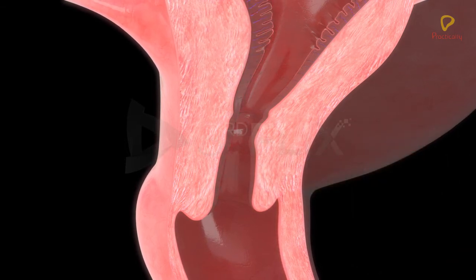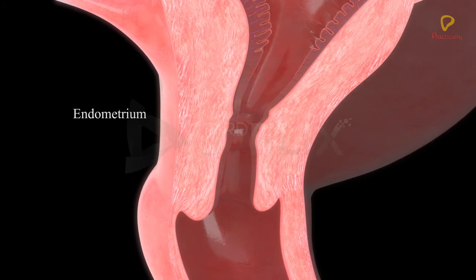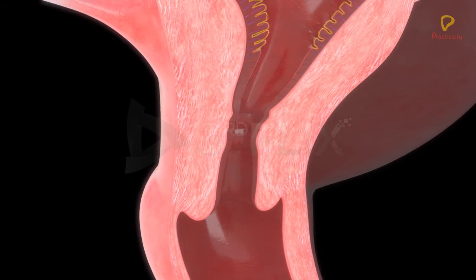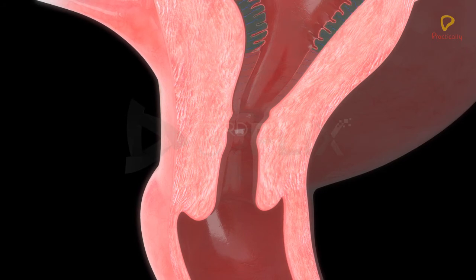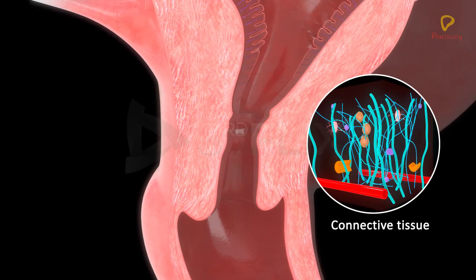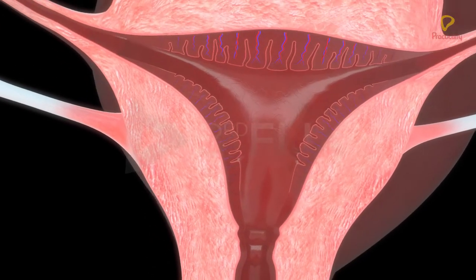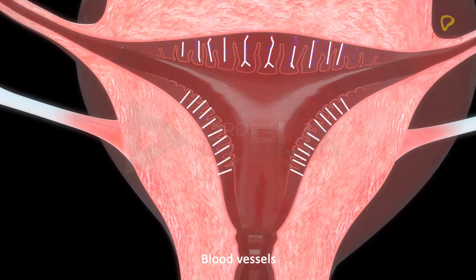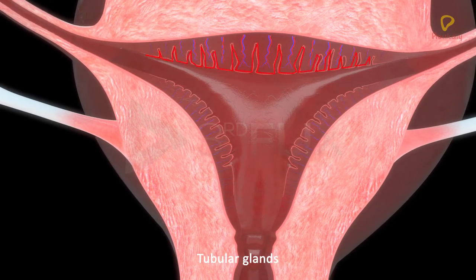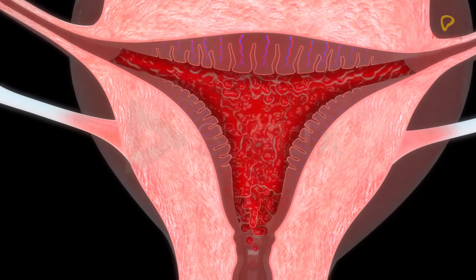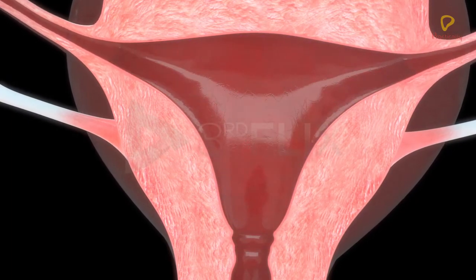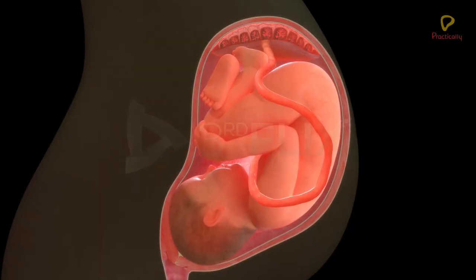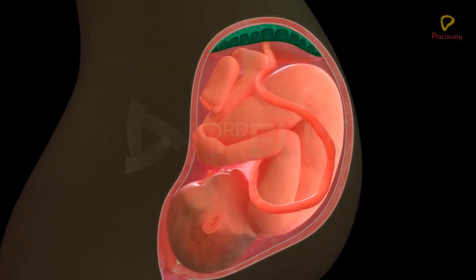The inner layer of the uterine wall is called endometrium. The endometrium, or mucosa layer of the uterus, consists of the inner epithelial layer and the lamina propria. The lamina propria is made up of areolar connective tissue. The endometrium is richly vascular and glandular, has a large number of screw-like blood vessels and many coiled tubular glands. The endometrium undergoes cyclic changes during the menstrual cycle, and it is the site of implantation of the blastocyst. After implantation, it also contributes to the formation of the placenta.